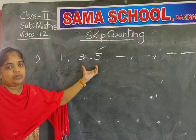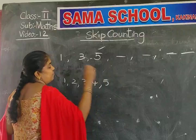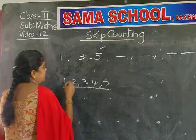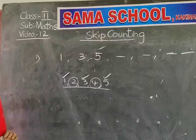Actually what is the order? The order of the numbers is 1, 2, 3, 4, 5. But what numbers did I write here? I wrote 1, 3 and 5. In the middle, I left 1 number — I skipped one number in the middle. I didn't write 2 here and I didn't write 4.